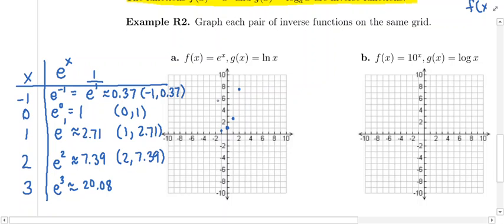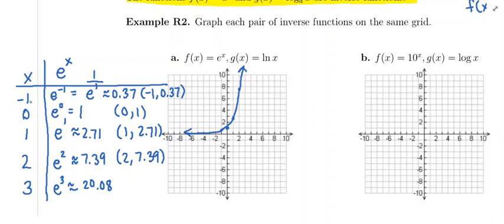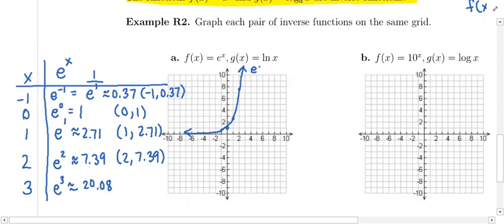Now I'm going to connect the dots. The graph of e^x — like any exponential function — one side grows very quickly, and the other side levels off somewhere. If you kept plugging in negative numbers, your y values are going to be positive but extremely tiny. So this is the graph of e^x: one side rises very quickly, the other side levels off, and it's leveling off at the x-axis. The x-axis is a horizontal asymptote.